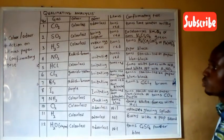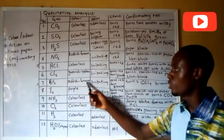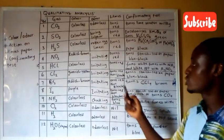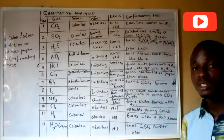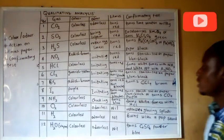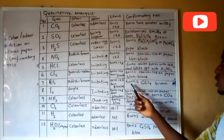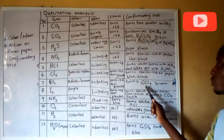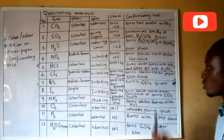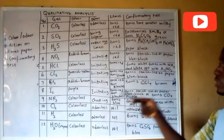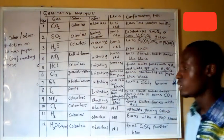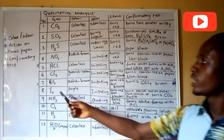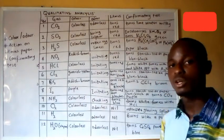Bromine is reddish-brown in color with an irritating smell. It turns blue litmus paper red and then bleaches it. The confirmatory test: it turns tetrachloromethane (CCl4) solution brown when introduced to the gas.